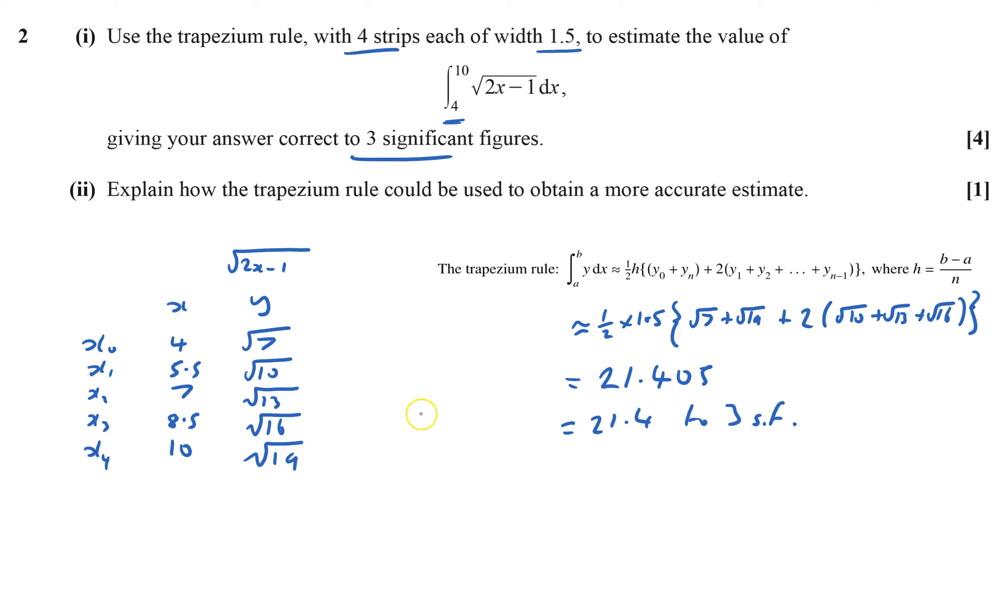Part two, explain how the trapezium rule could be used to obtain a more accurate estimate. Well, that's fairly obvious, use more strips, or narrower strips. In essence, they mean the same thing. And that's question two done.